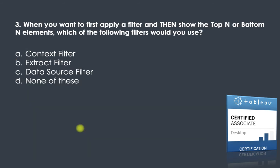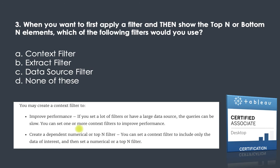When you want to first apply a filter and then show the top N or bottom N elements, which filter would you use? Referring to Tableau Help and searching 'context filters,' you will see that you may create a context filter. The second option is to create a dependent numerical or top N filter — you can set a context filter to include only the data of interest and then set a numerical or top N filter.